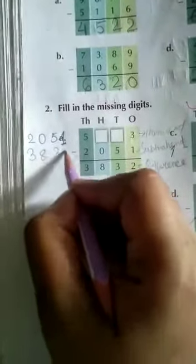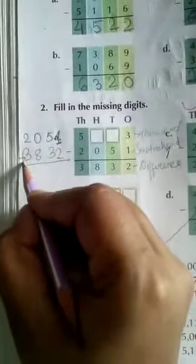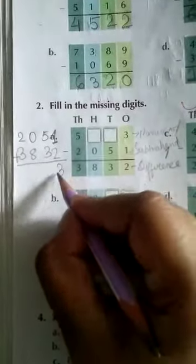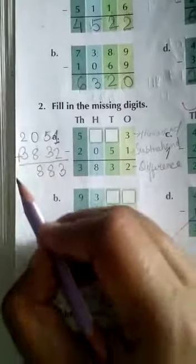You see, at first we are going to write the subtrahend, what is subtrahend? 2, 0, 5, 1. And what is the difference? 3, 8, 3, 2. Sorry, this will be addition. Now you add, 1 plus 2 is what? It is 3. 5 plus 3 is what? It is 8. 0 plus 8 is 8. And 2 plus 3 is 5.